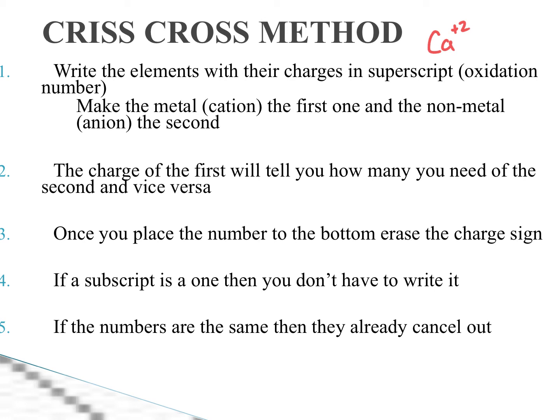Step two says the charge of the first tells you how many you need of the second and vice versa. The charge of the second tells you how many you need of the first. And it says once you place the number to the bottom, erase the charge side. Step four says if you have a subscript that is one, then you don't have to write it. And number five, if the numbers are the same, then they already cancel out.